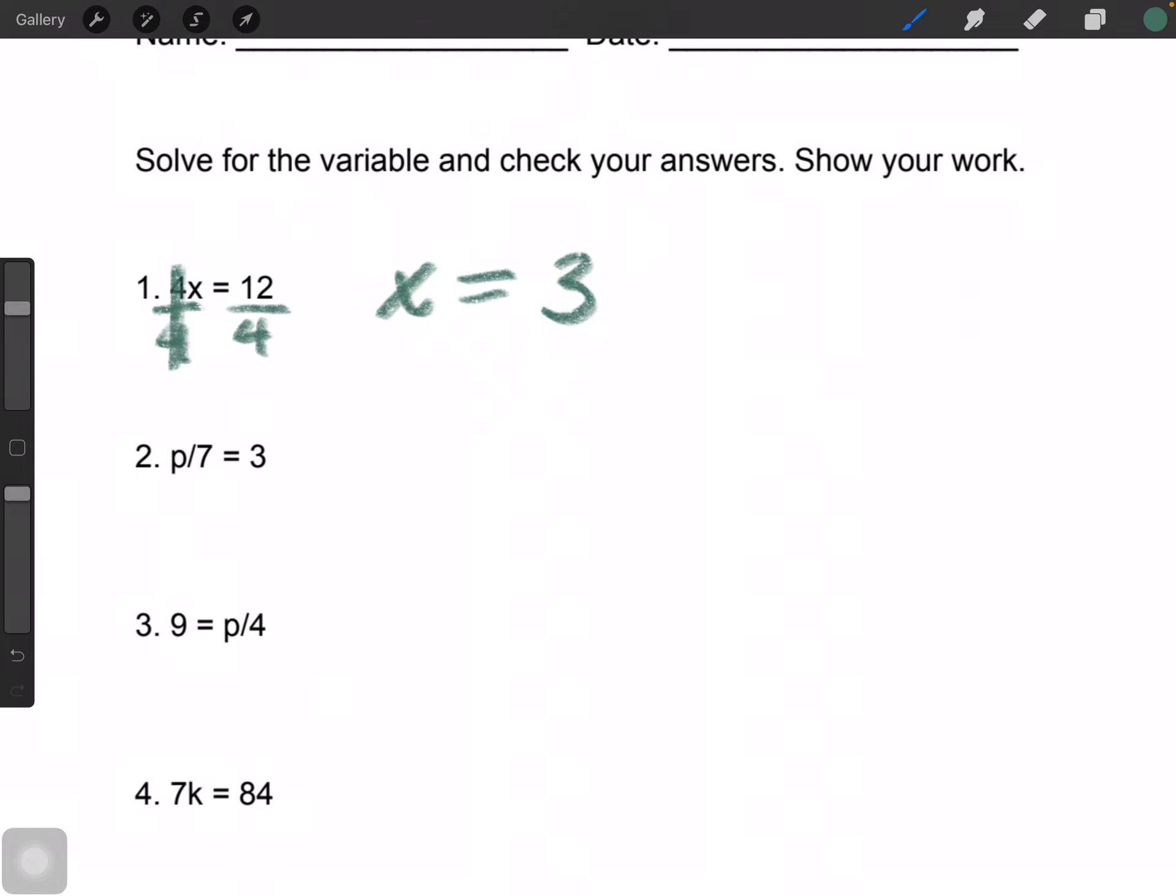Okay, number 2 says P, I'm going to rewrite it, P over 7 is equal to 3. So P is being divided by 7, in this case, and we want to do the inverse of that, which is multiply by 7, which cancels this out to equal 1. 1 times P is equal to P equals, well, I forgot to multiply this part by 7 as well. 7 times 3 is equal to 21.